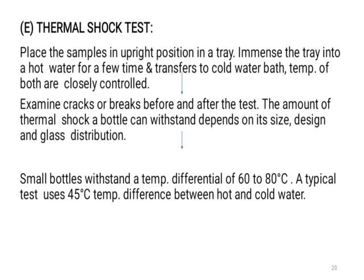The thermal shock test checks whether the container resists sudden changes in temperature. We check if the container remains safe when heated to a high temperature and then suddenly cooled — for example, increasing temperature to 200–300°C and then cooling to 40–50°C. Bottles should withstand a temperature difference of 60 to 80 degrees Celsius without any breaking or leaking of glass. This is done by placing the container in hot water and immediately transferring it to cold water.